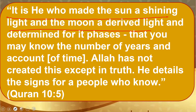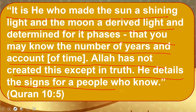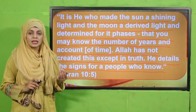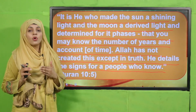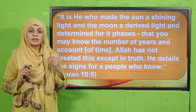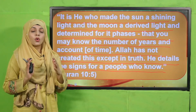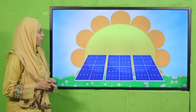Allah says in the Quran: 'It is He who made the sun a shining light and the moon a derived light, and determined for it phases, that you may know the number of years and account of time.' Allah ne suraj ko banaya taake hum se energy hasil kar sakein, roshni hasil kar sakein, heat hasil kar sakein. Iske ilawa chand ko banaya taake din aur raat ka andaza laga sakein, aur hafton, dinon aur saalon ka record rakhne ke liye bhi suraj aur chand ki zarurat hoti hai.